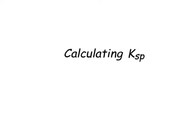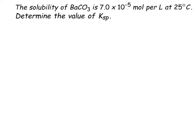This time, we're going to work backwards to calculate Ksp itself, given the solubilities. So the first part of problem number 9 says, the solubility of BaCO3 is 7.0 times 10 to the negative 5 moles per liter at 25 degrees, determine the value of Ksp.